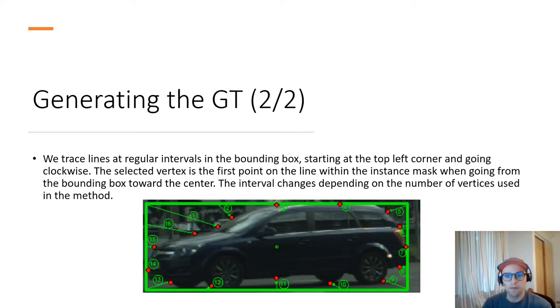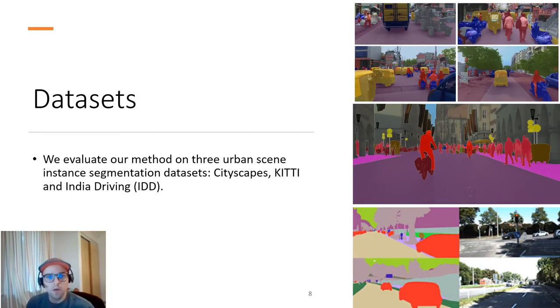The number of vertices is a hyperparameter that can be adjusted. To evaluate our method, we use three urban scene instance segmentation datasets: the very popular Cityscapes dataset, we also use KITTI, which is very popular but a bit less for instance segmentation, and also India Driving Dataset, also known as IDD.